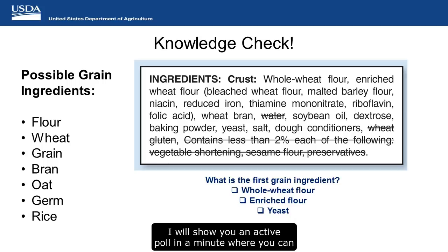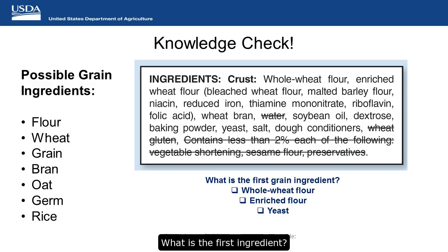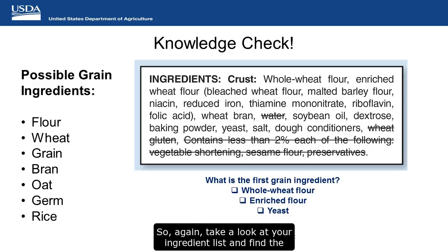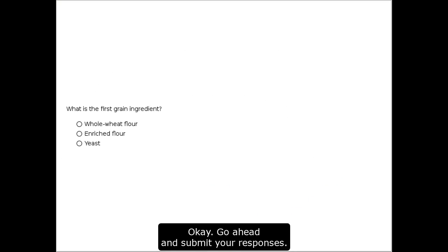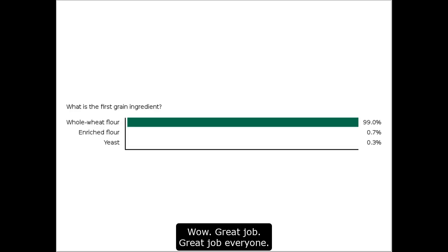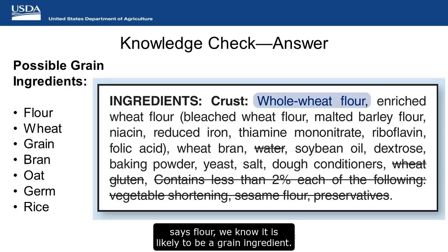Let's do a quick knowledge check. Take a look at this ingredient list for the pizza crust. What is the first grain ingredient? Is it whole wheat flour, enriched flour, or yeast? Go ahead and select your answer on the polling slide. The answer is whole wheat flour — it is listed first on the ingredient list, and because it says flour, we know it is likely a grain ingredient.